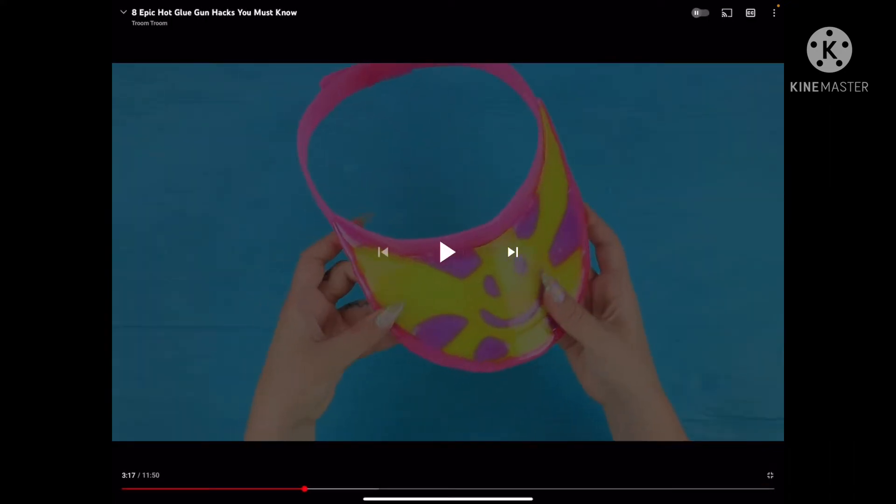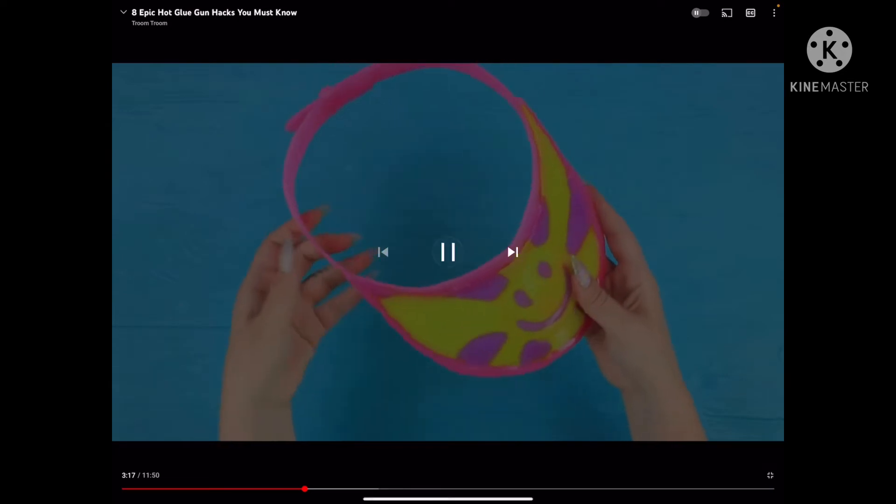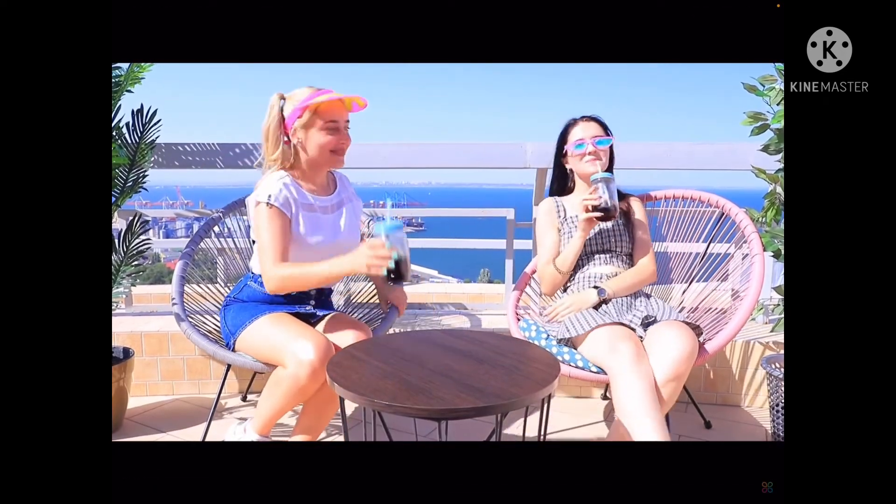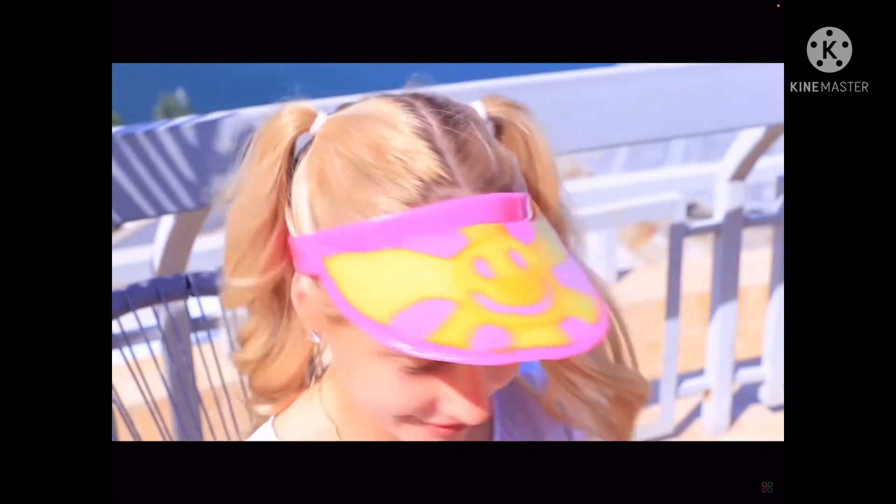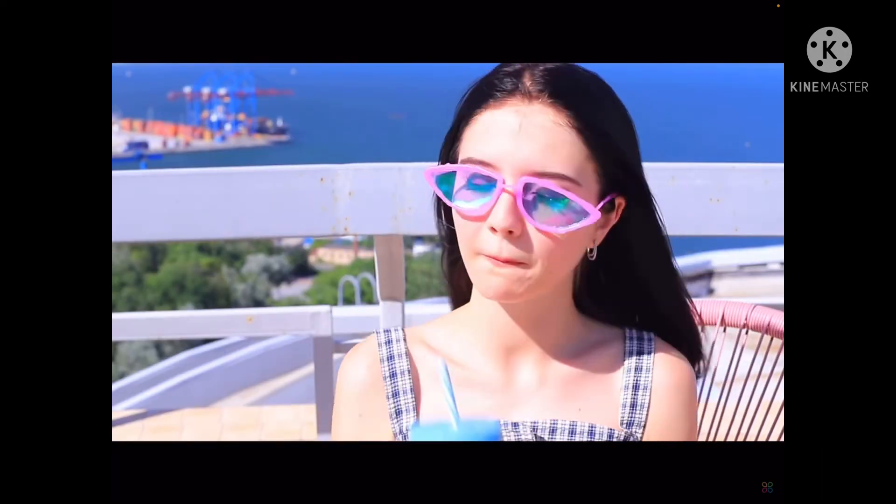And attach a fastener so it can close. Join the visor and the strap. Okay, they weren't kidding when it was like hot glue gun hacks because it is literally only just hot glue and a hot glue gun. Like, this is all purely made out of hot glue. It seems really weird to me. I don't know if you guys got that feeling too, but I do.